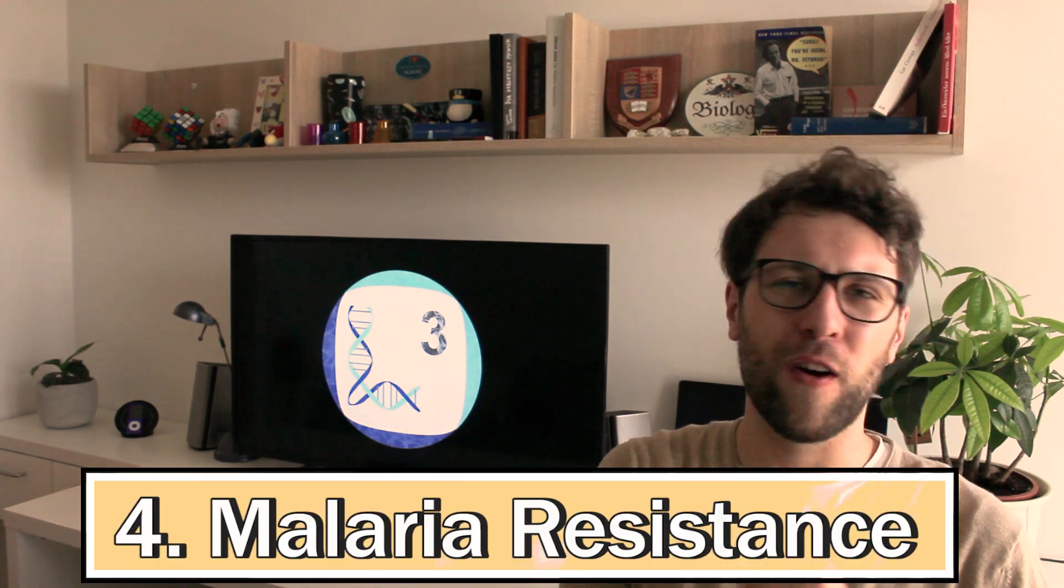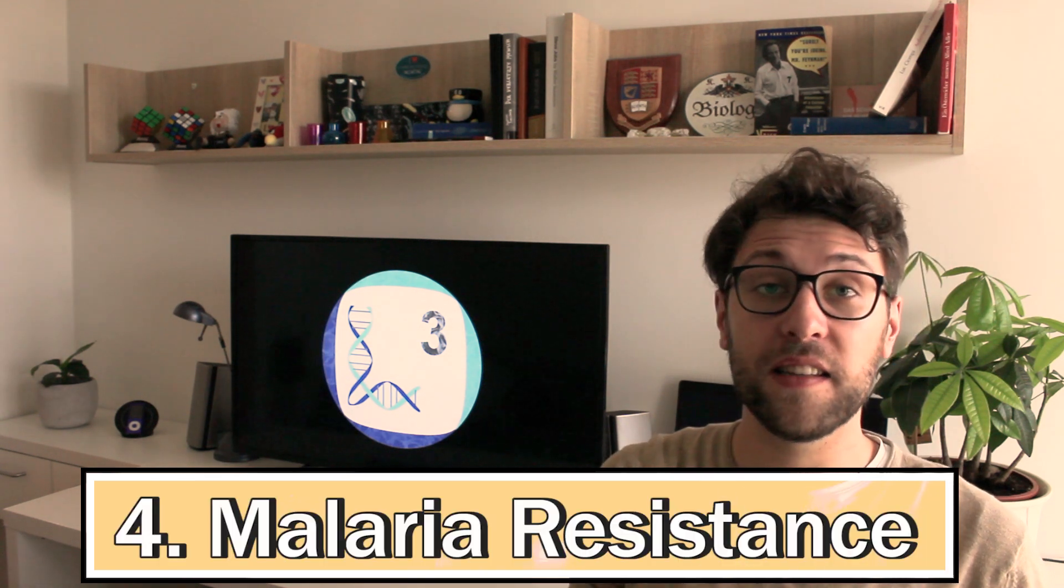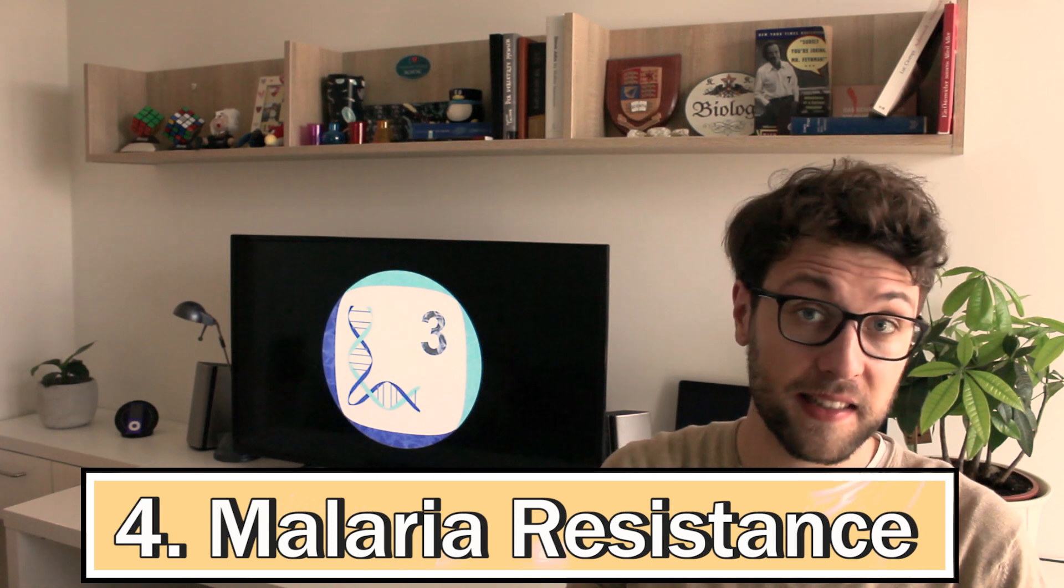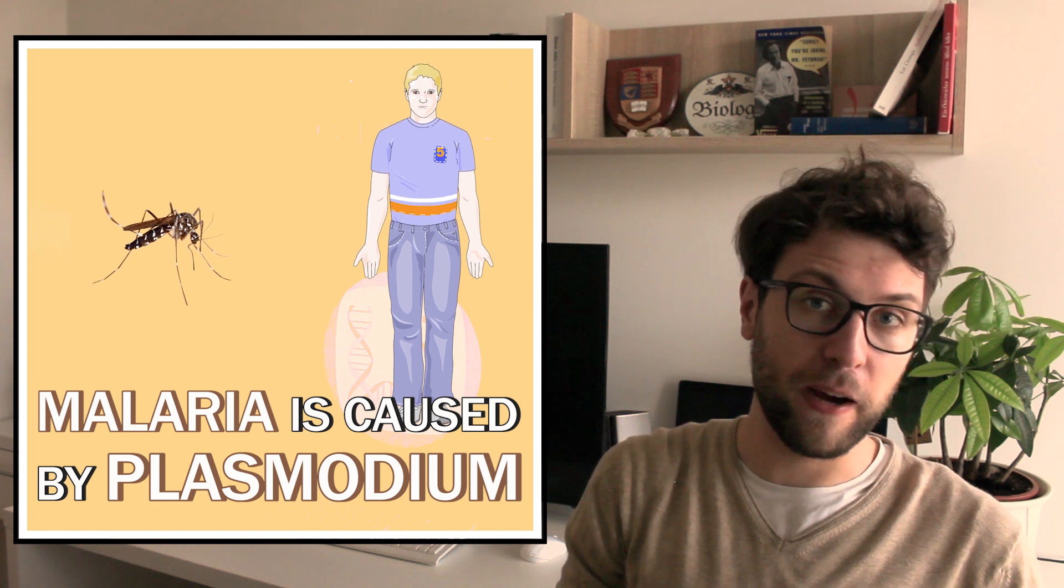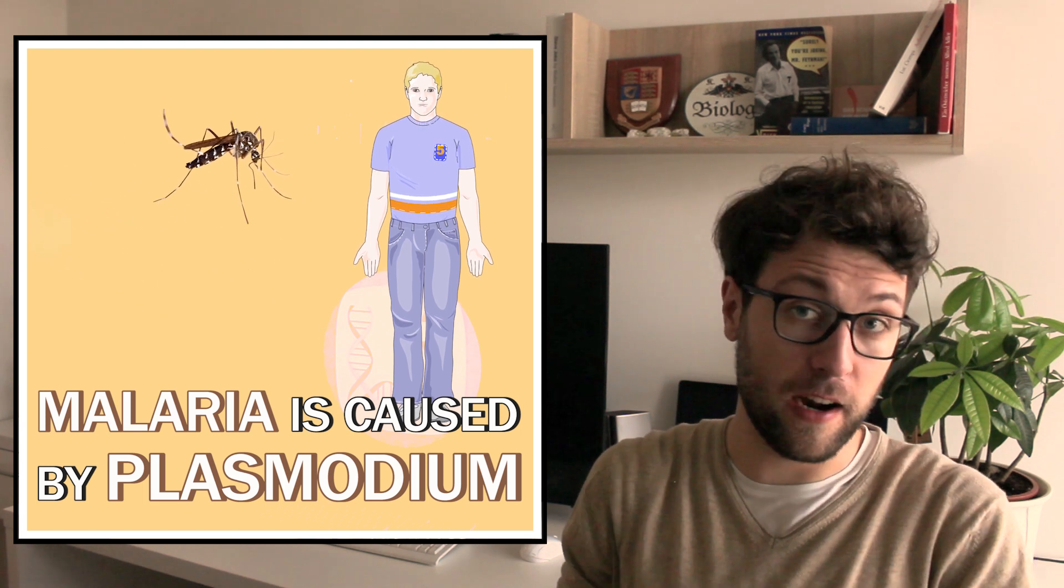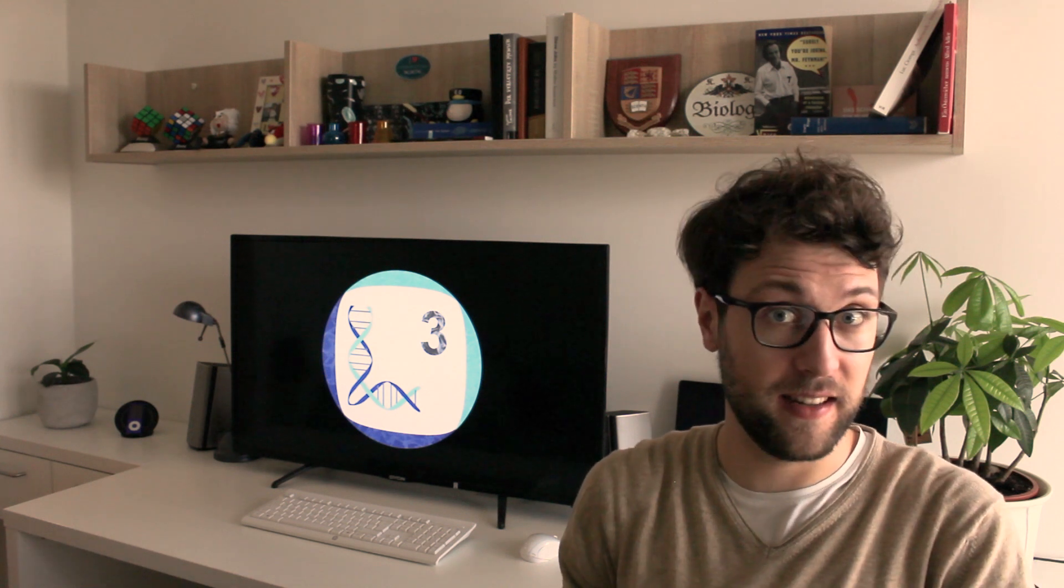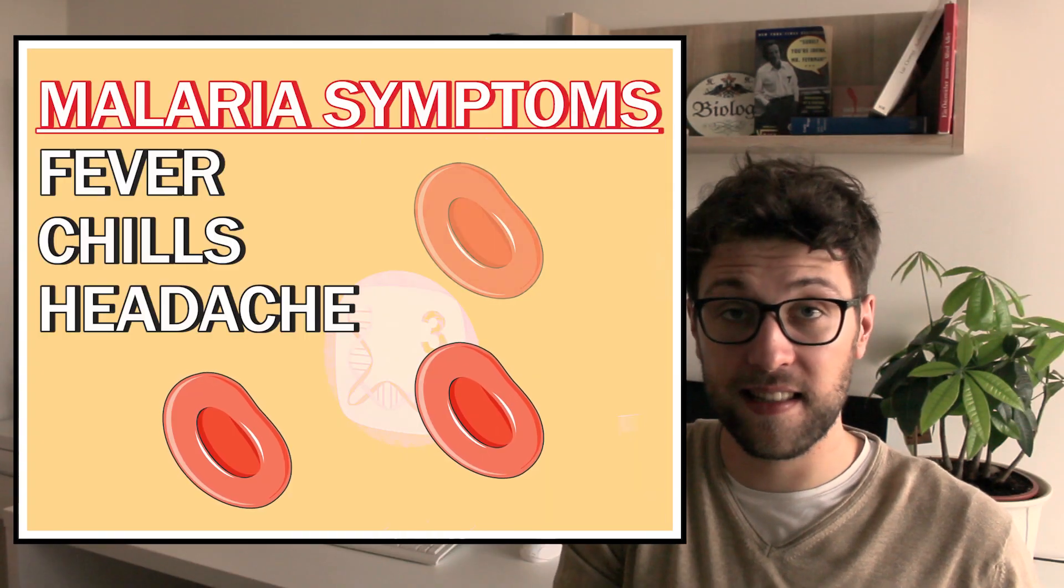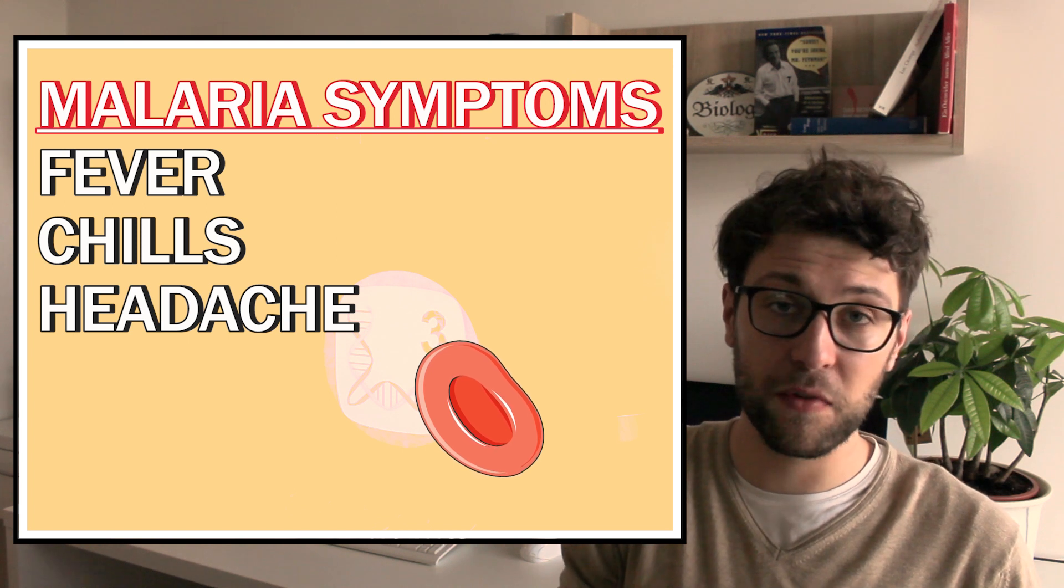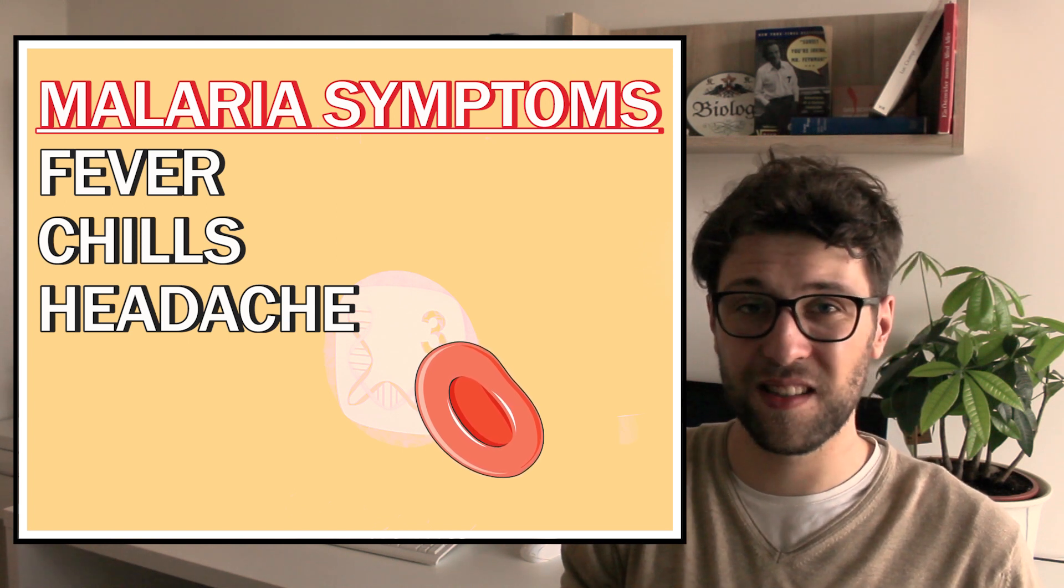So let's move on to number four. Some people have the ability to be resistant against certain diseases such as malaria. I think we've all heard about malaria. Malaria is caused by a pathogen called Plasmodium falciparum and it's transmitted through mosquito bites. Once this parasite enters our bloodstream it starts to infect liver cells and later red blood cells. It uses these cells to reproduce and starts to destroy them. As a result an infected person has less and less red blood cells and start to experience symptoms like fever, chills or headache.